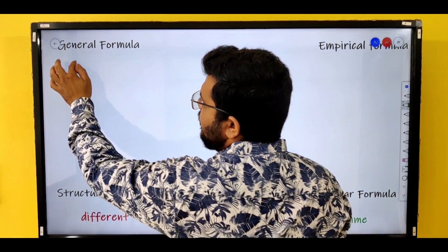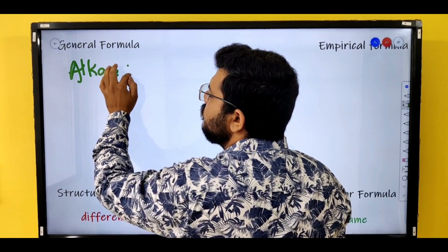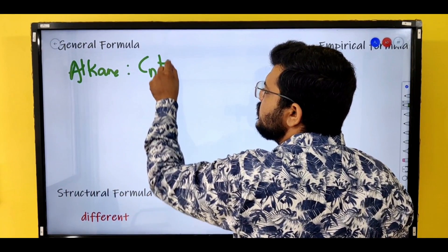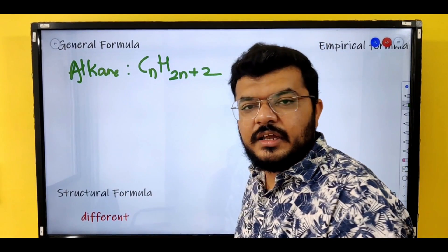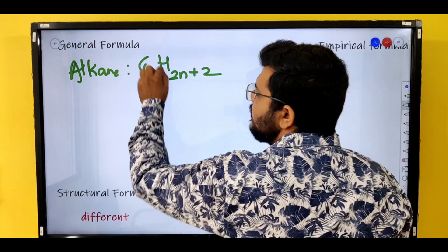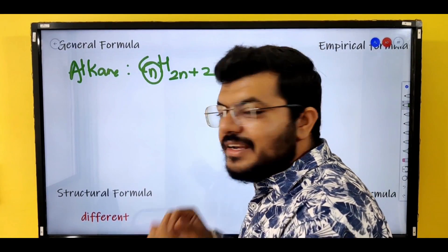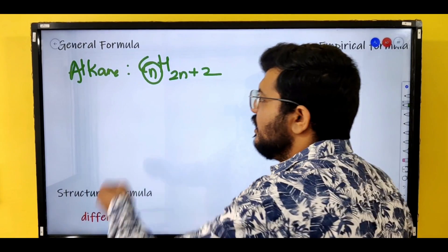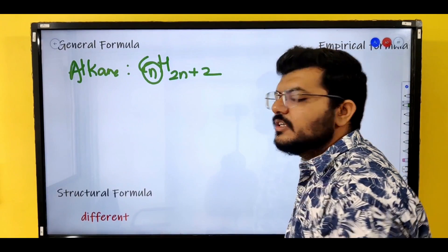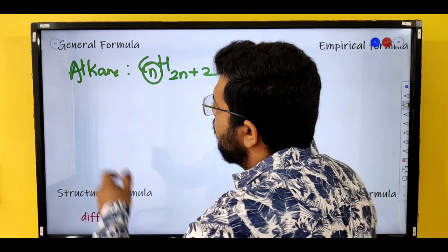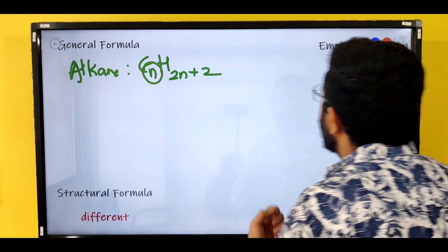The first thing: what is a general formula? Let's take an example of any alkane. All the alkanes will follow the general formula CₙH₂ₙ₊₂, where N is the number of carbons. This becomes your general formula. General formula is there for all homologous series and all functional groups.